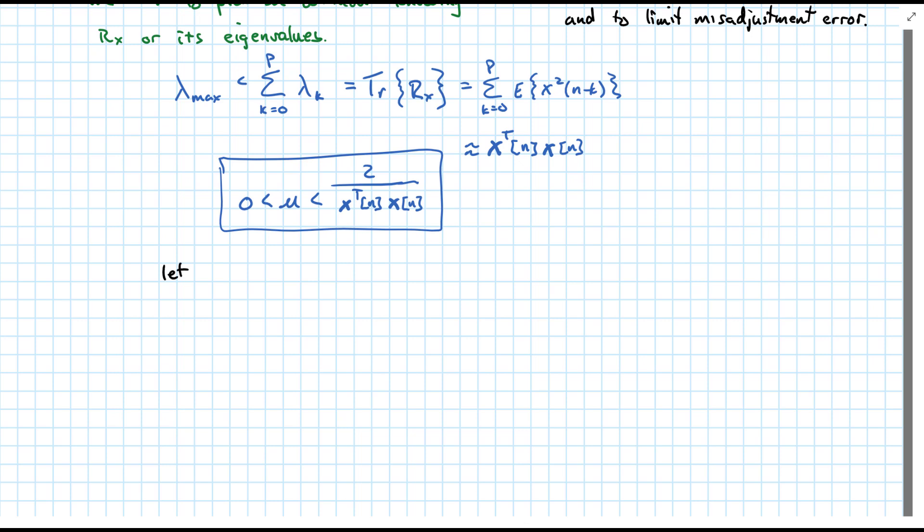We're going to let mu, and I'm changing this now, to be as a function of n, beta over x transpose n xn, and sometimes we'll add an epsilon here to avoid divide by 0.